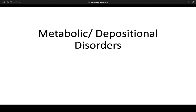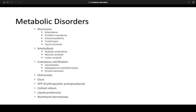In this lecture, we will cover Metabolic and Depositional Disorders. Here's a list of the entities we will be covering: broad categories include mucinoses, amyloidosis, cutaneous calcification, ochronosis, gout, erythropoietic protoporphyria, colloid milium, lipoproteinosis, and nutritional dermatoses.